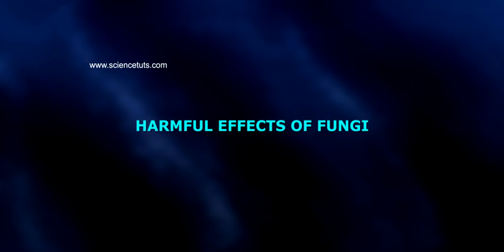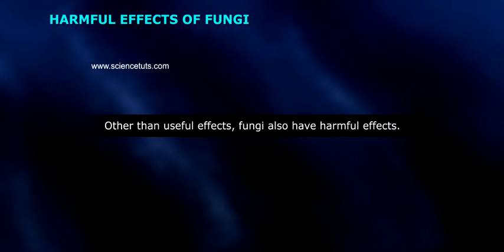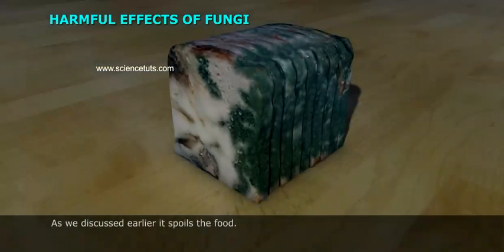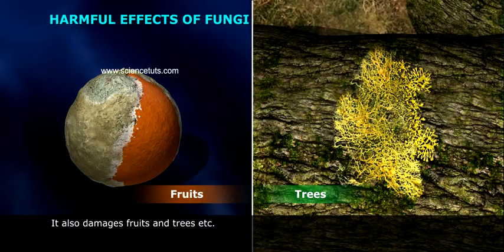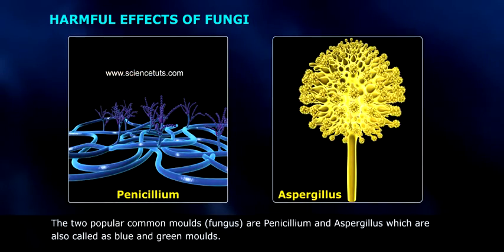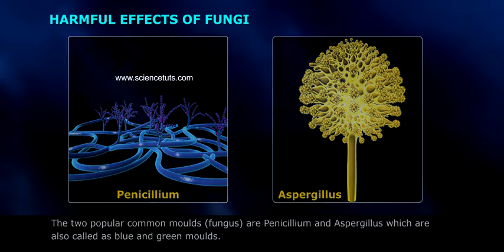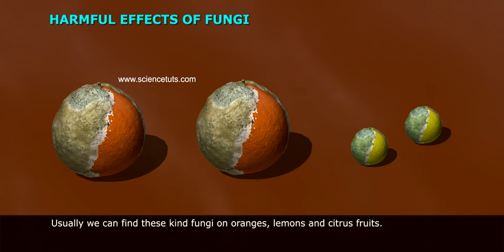Harmful effects of fungi. Other than useful effects, fungi also have harmful effects. As we have discussed earlier, it spoils the food. It also damages fruits and trees. The two popular common moulds are Penicillium and Aspergillus, which are also called blue and green moulds. Usually, we can find this kind of fungi on the rotting of oranges, lemons, and citrus fruits.